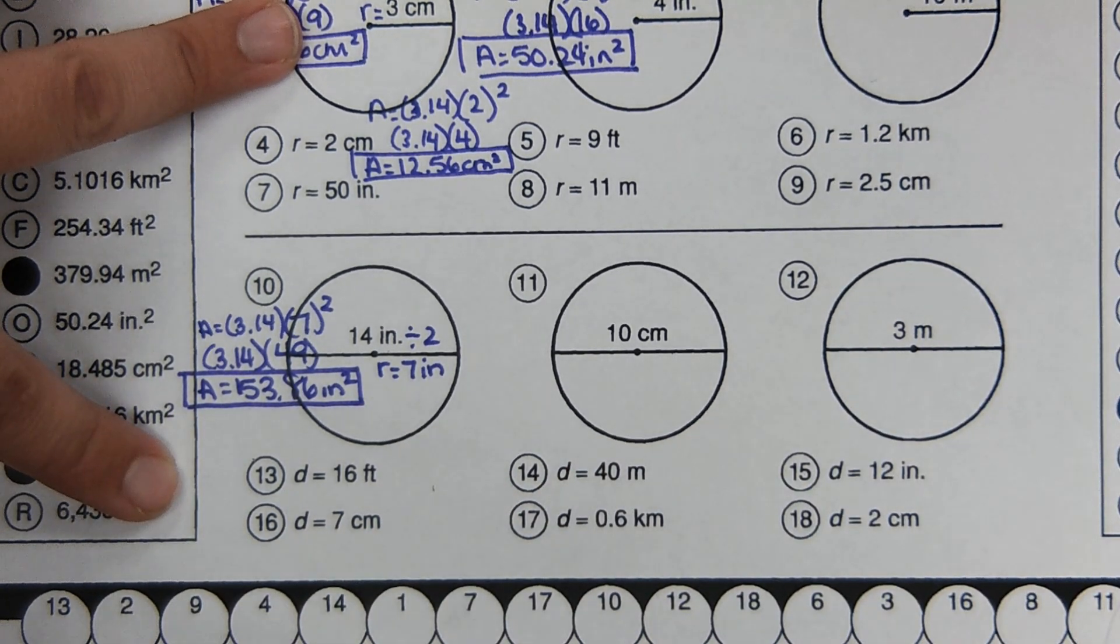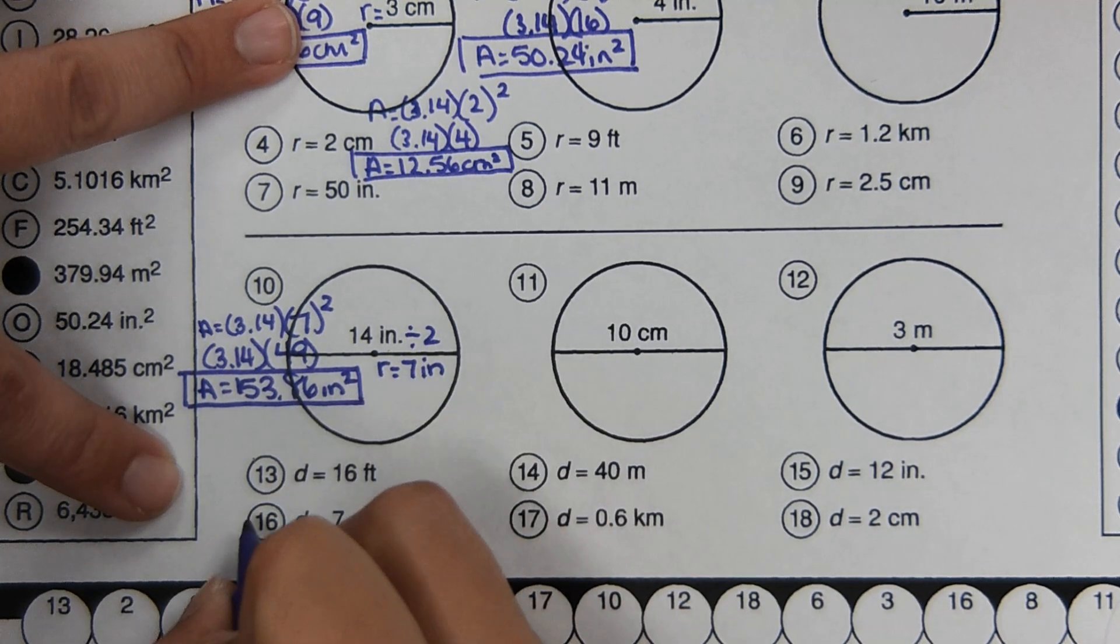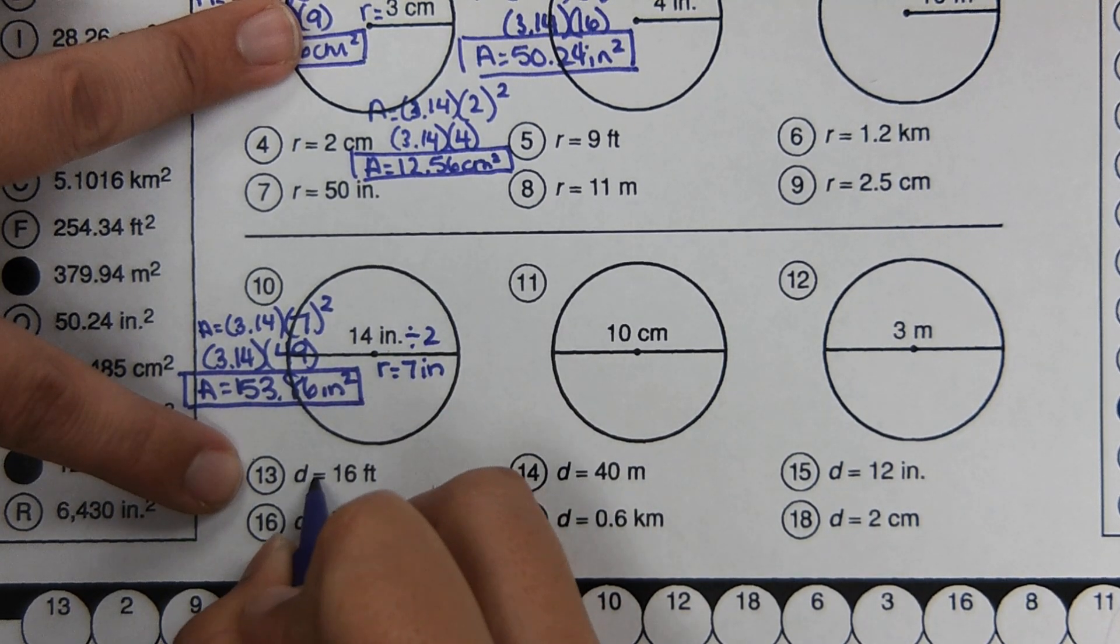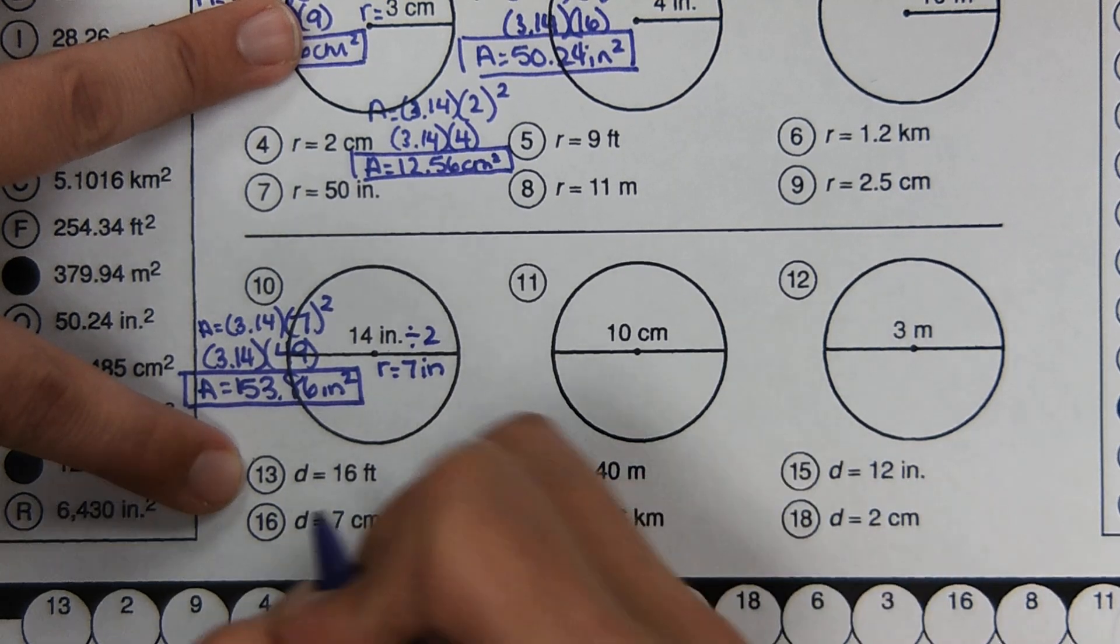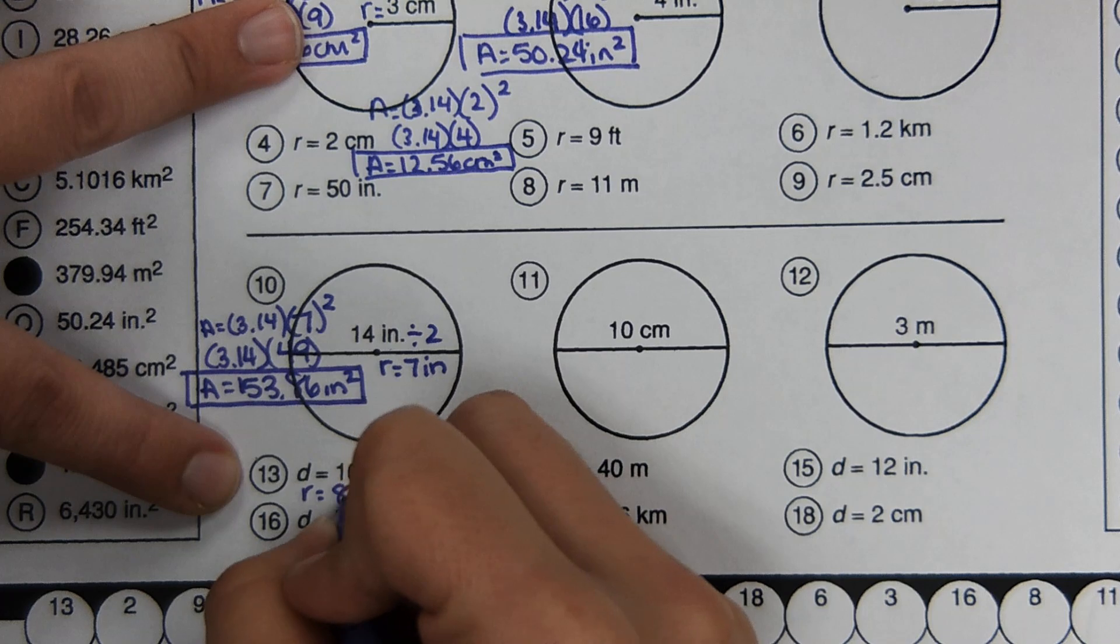Okay, we're going to skip down to 13. It tells us diameter equals 16. It doesn't show us a picture. We divide this by two to get the radius. So halfway across would be eight feet.